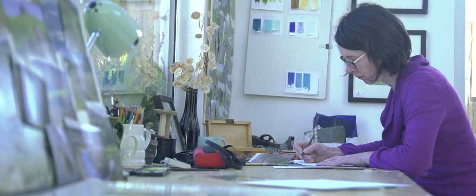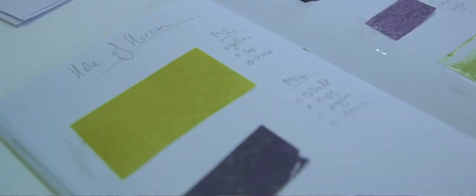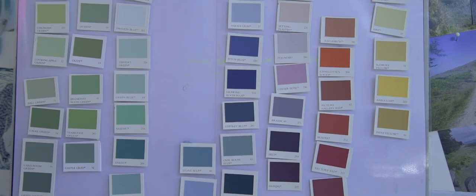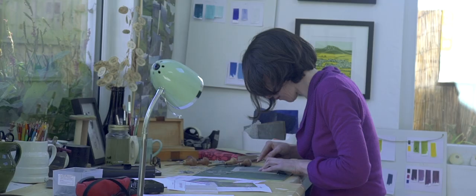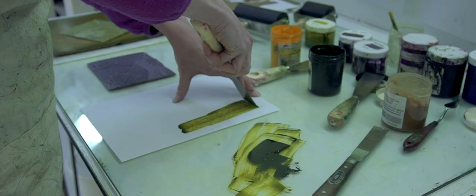I start off with a photograph and then it's working out how the plates will break down. So it's how you distill that image down into maybe two colors or three or four colors, and then the process of cutting those plates, working out the registration, mixing all the colors.